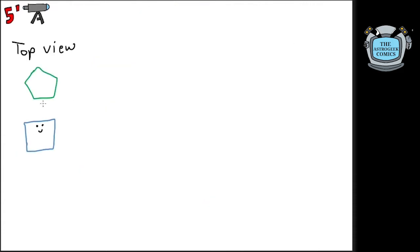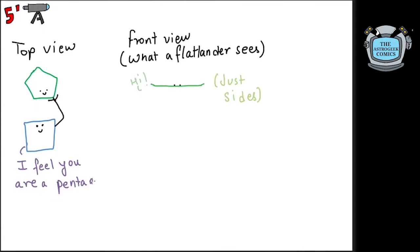Flatlanders can only see each other's sides, since there is no top or bottom to see what shape someone is. People in this world recognize each other by feeling the angles between the sides and hence guessing the shape.